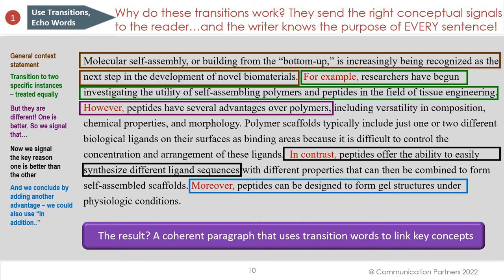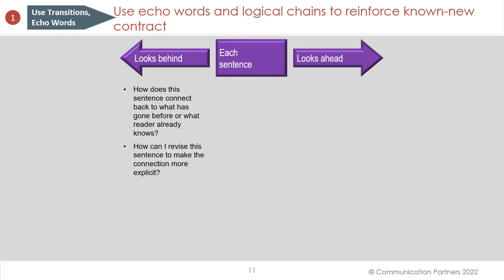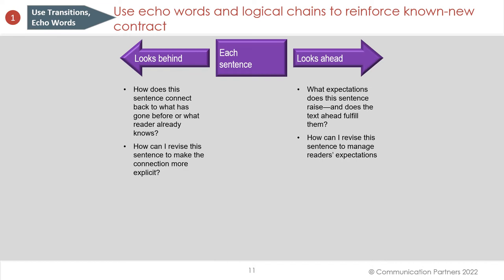You want to use echo words and logical change to reinforce the known-new contract — each sentence looks behind, connecting back to what the reader already knows, and each sentence looks ahead, raising expectations the text must fulfill. Ask yourself: how can I revise this sentence to make the connection more explicit, and how can I manage the reader's expectations?